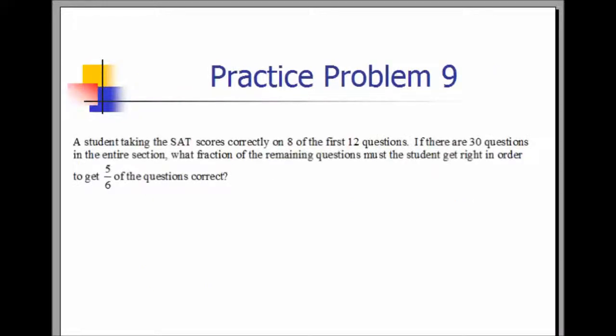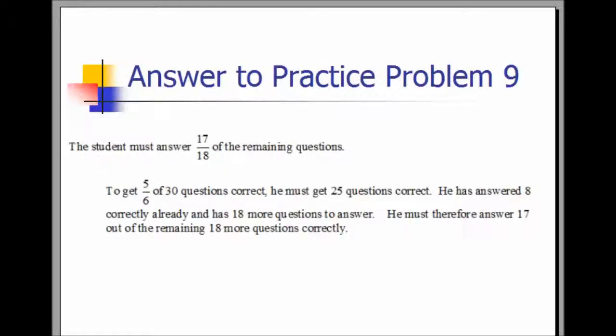Practice Problem 9. A student taking the SAT scores correctly on eight of the first 12 questions. If there are 30 questions in the entire section, what fraction of the remaining questions must the student get right in order to get five-sixths of the questions correct? The student must answer 17 out of 18 of the remaining questions. To get five-sixths of 30 questions correct, he must get 25 questions correct. He has answered eight questions correctly and has 18 more to answer. Therefore, he must answer 17 out of the remaining 18 questions correctly.